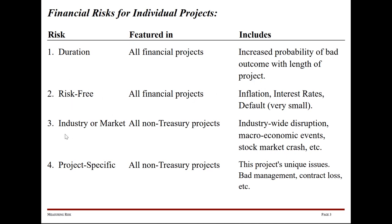Next up is industry or market risk, and this has to do with any project that's not a Treasury project. When we're looking at a Treasury project, we stop at risk number two, but for everything else we keep going. Industry or market risk includes things like an industry-wide disruption, macroeconomic disruptions, stock market crashes, stuff like that.